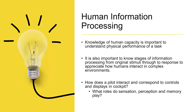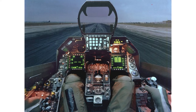Knowledge of human capacity is important for understanding the physical performance of a task and allows us to design work tasks that are suitable for our abilities and natural tendencies. We also need to know how the stages of information processing, from the original stimulus to the response, happen to appreciate how humans interact with complex environments. For example, how does a pilot interact and respond to controls and displays in a cockpit? What role does sensation, perception, and memory play to help the pilot respond appropriately?